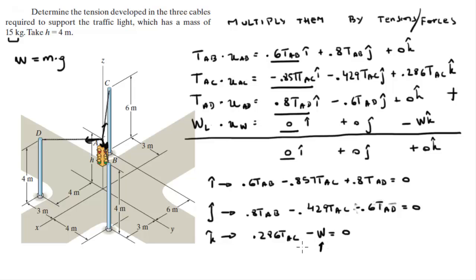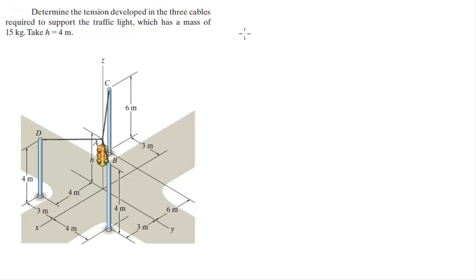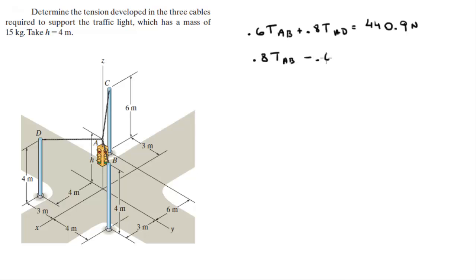Plugging the weight into the k-equation and solving for TAC gives TAC = 514.5 N. Now we substitute this value into equations 1 and 2, replacing TAC in both, to get two new equations in TAB and TAD. Equation 1 becomes: 0.6·TAB + 0.8·TAD = 440.9 N. Equation 2 becomes: 0.8·TAB - 0.6·TAD = 220.7 N.